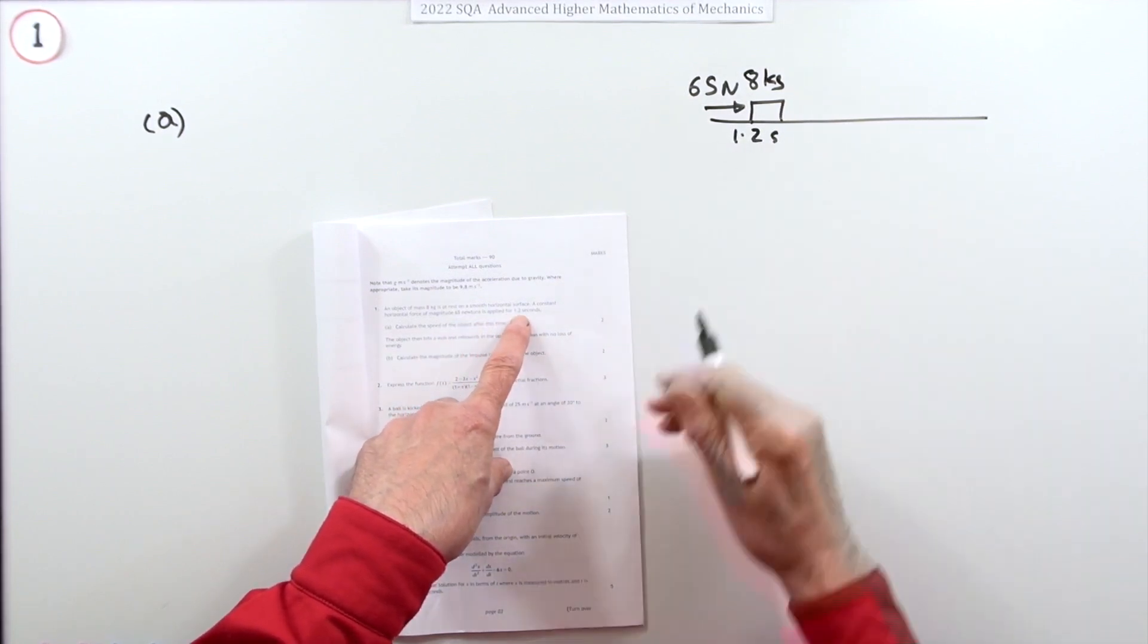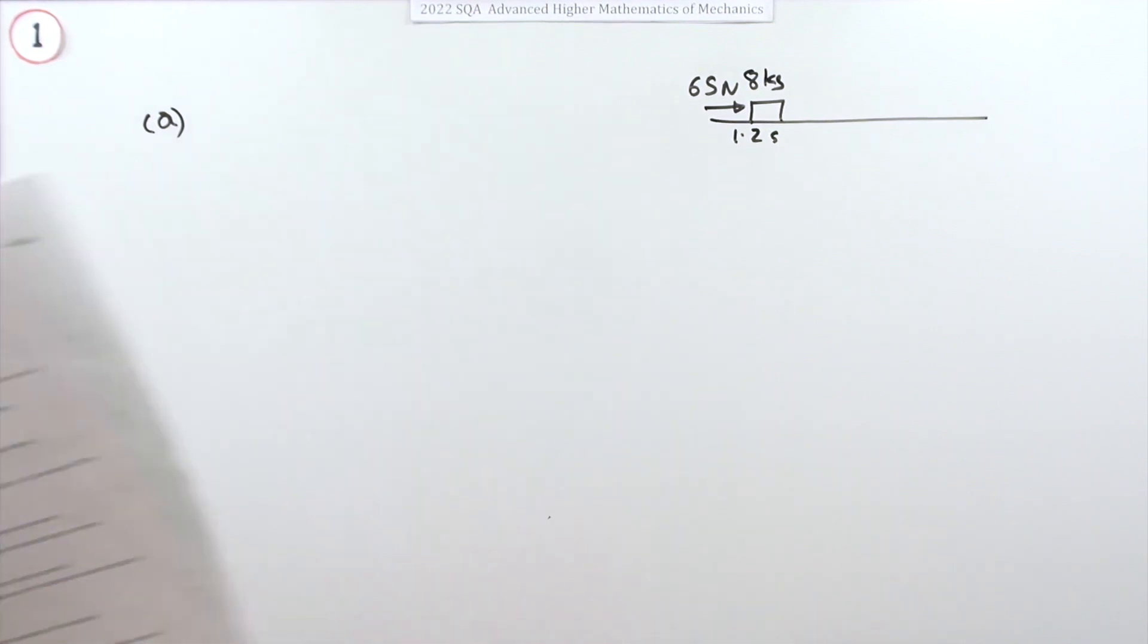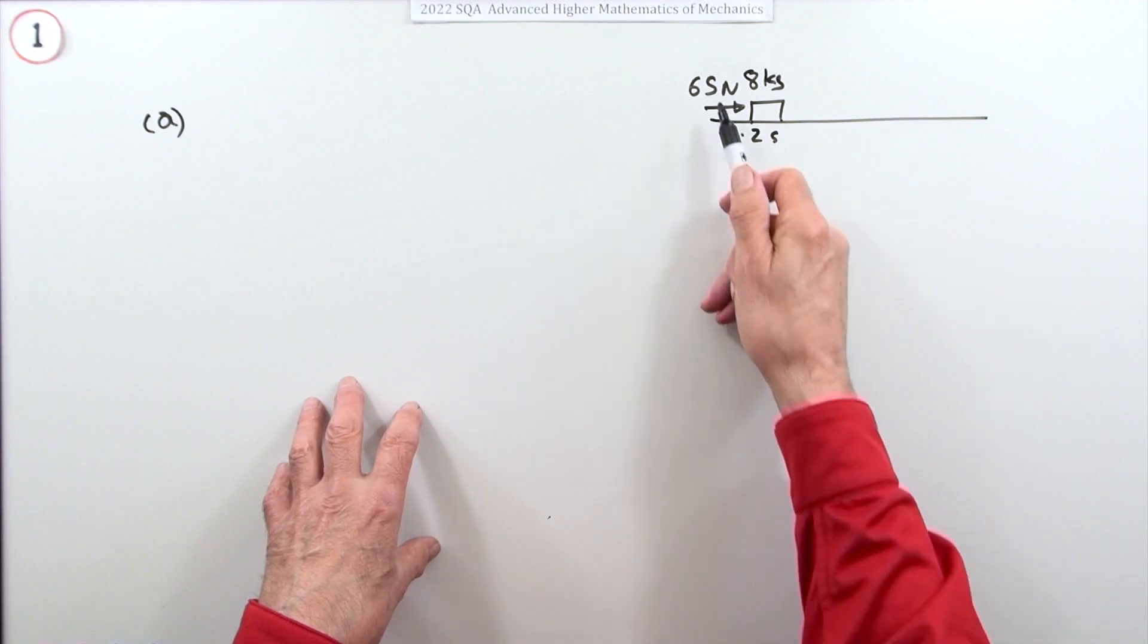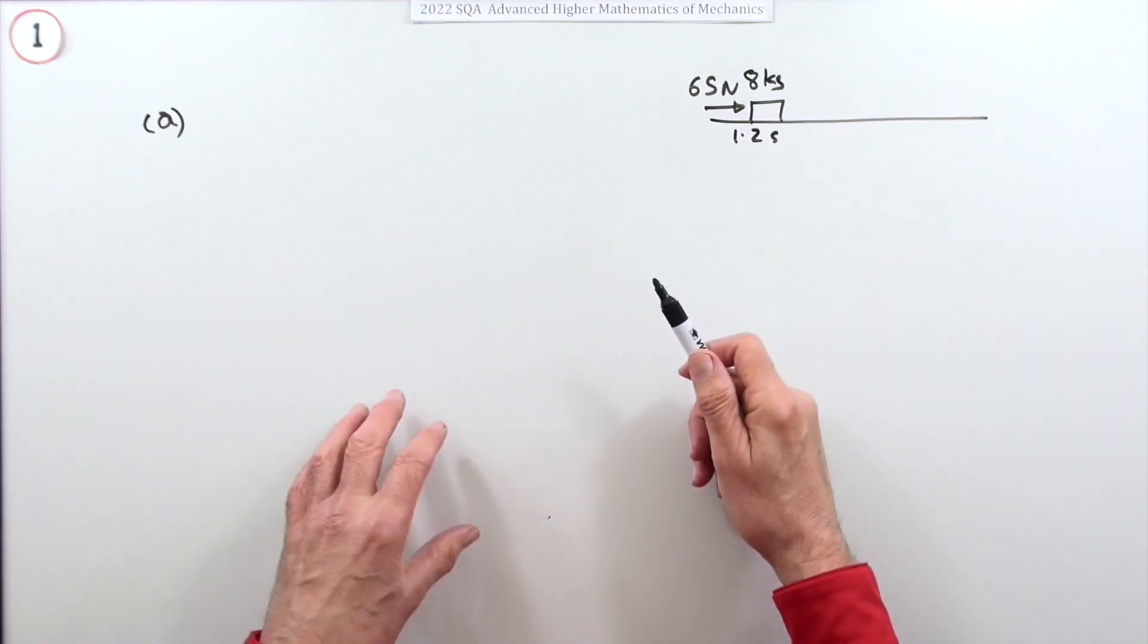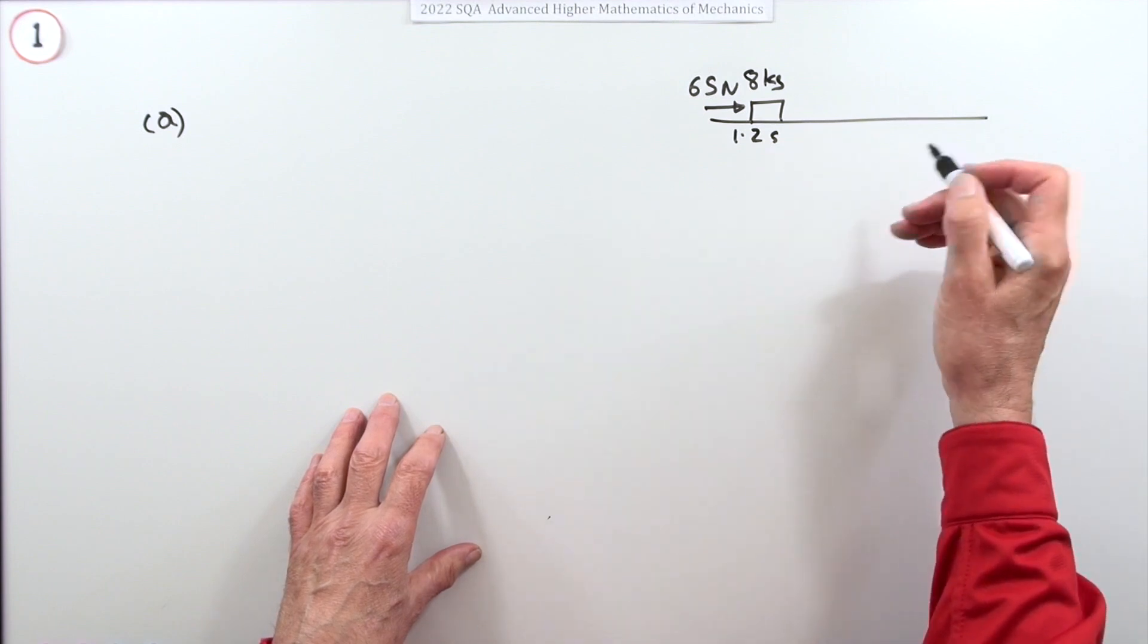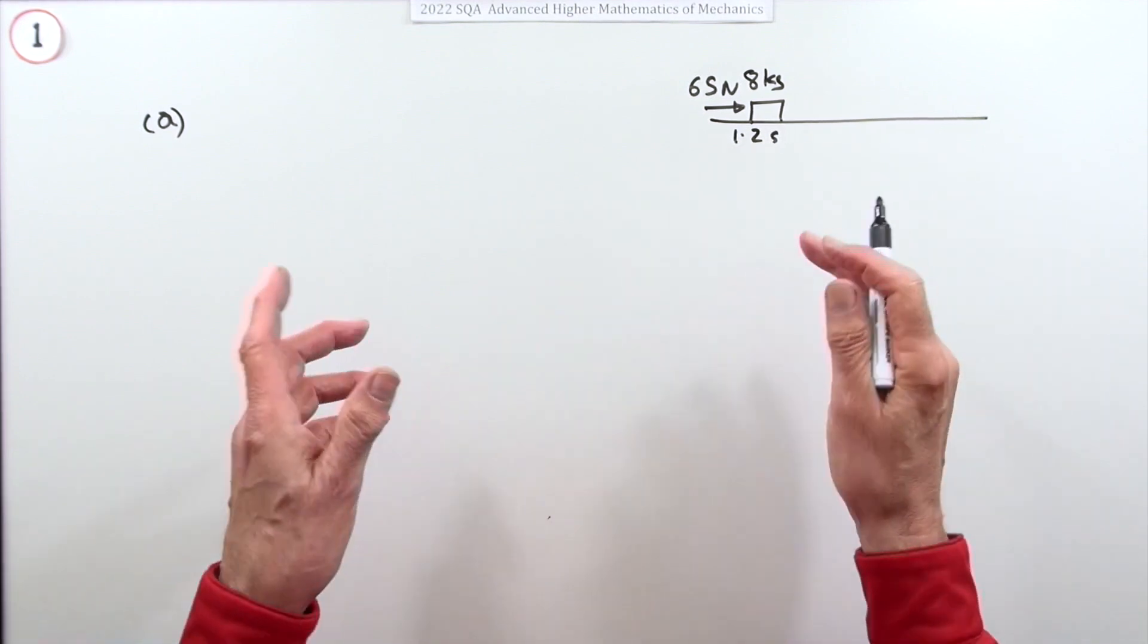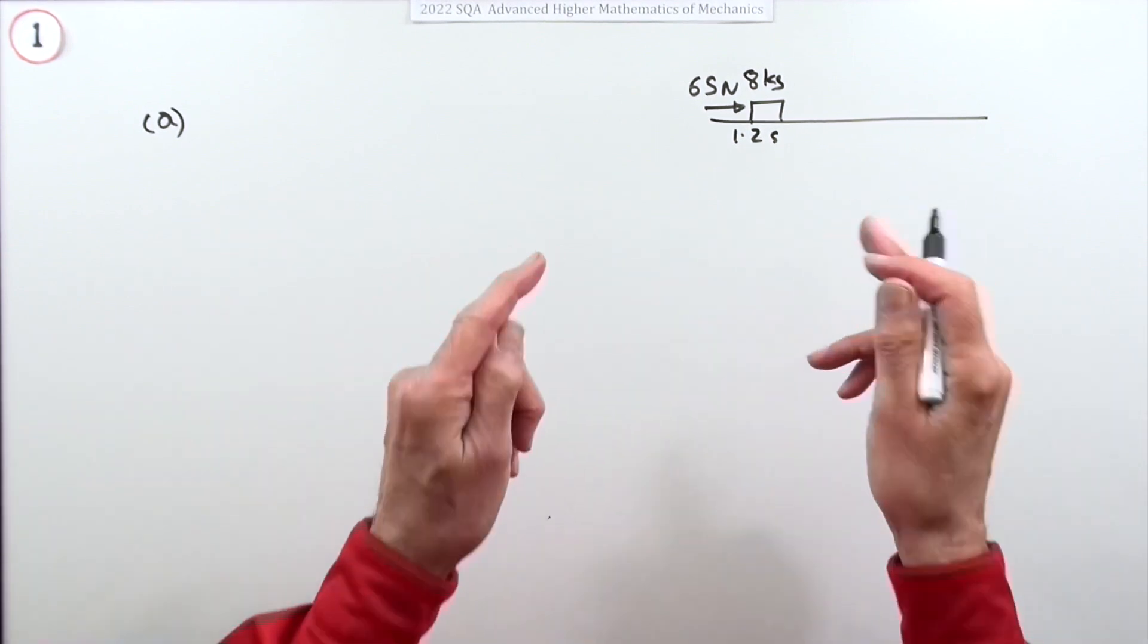It's only applied for a certain amount of time, 1.2 seconds. Calculate the speed of the object after this time. You might think force equals mass times acceleration, get the acceleration, and then from that find the speed after 1.2 seconds since it's starting at rest. In other words, use Newton's second law.